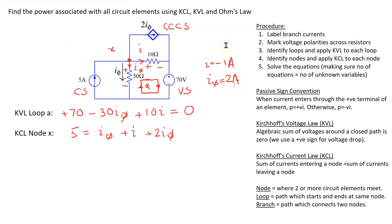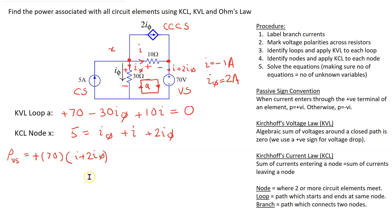First let's look at the voltage and current sources. The power associated with the voltage source is the product of the voltage times the current. The current through this source is I plus 2I_phi, entering the terminal marked plus. So we write the power formula with a positive sign. Substituting the values, this evaluates to plus 210 watts. The positive answer means this voltage source is absorbing power in this circuit.